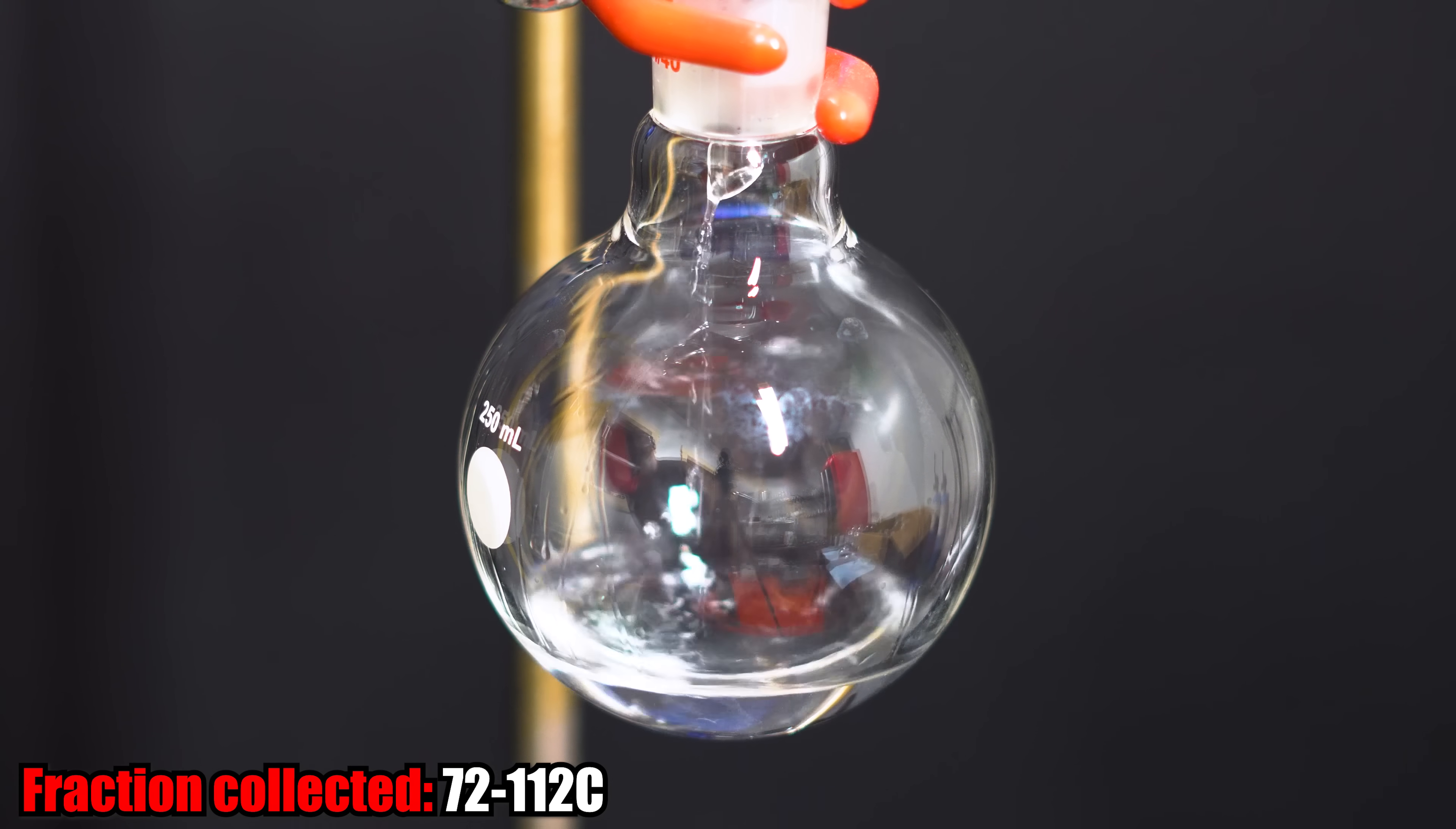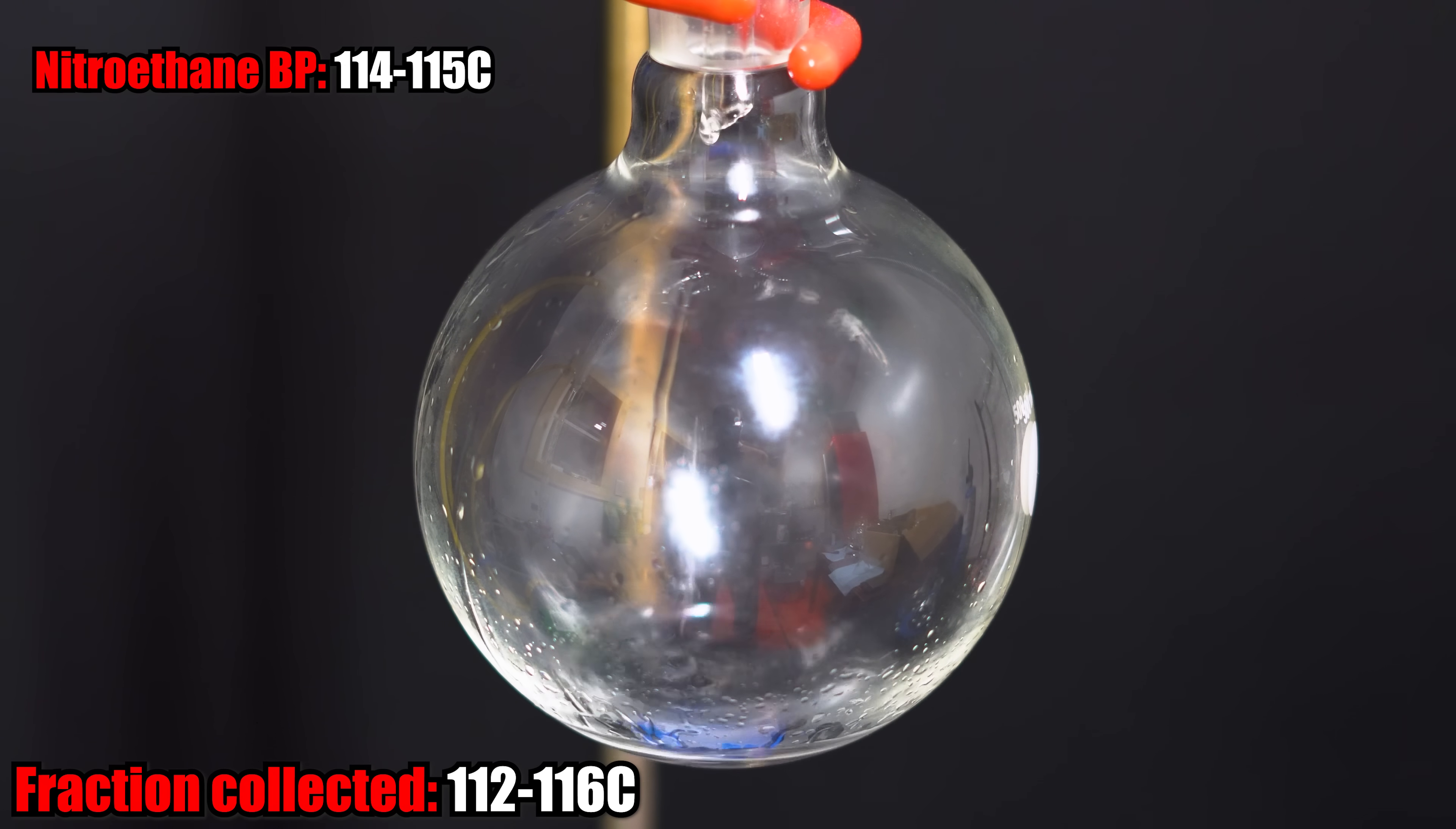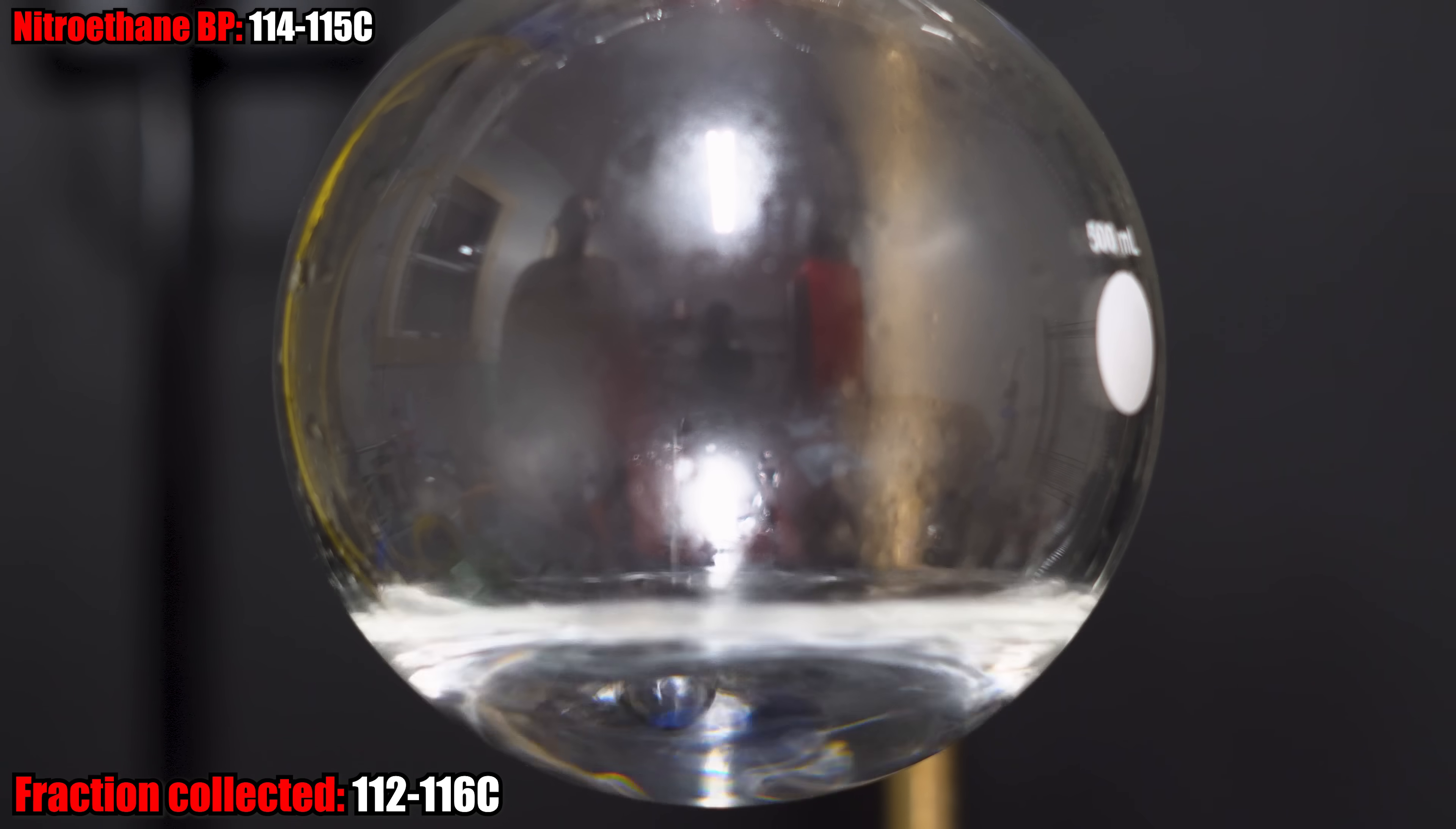I decided to collect this fraction all the way up to about 112 degrees Celsius. Once it was at that temperature, I decided to switch out the flask and start collecting the nitroethane. There was a huge gap between the ethyl acetate and nitroethane boiling point, so I thought it would be okay to start at this temperature. It did rise up to about 114-115 degrees Celsius, and it stayed there for a while. The second this fraction hit 116 degrees Celsius was when I was going to remove the flask. Since butan-1-ol's and nitroethane's boiling point are so similar, I wanted to minimize the amount of butan-1-ol that comes into the nitroethane.